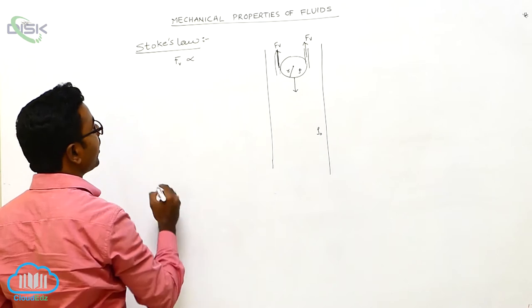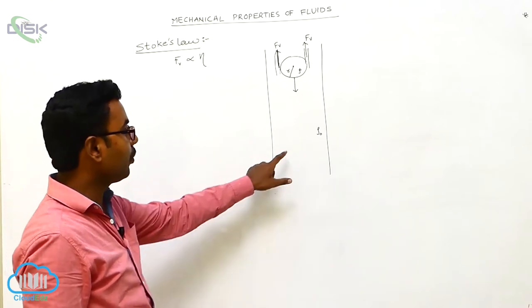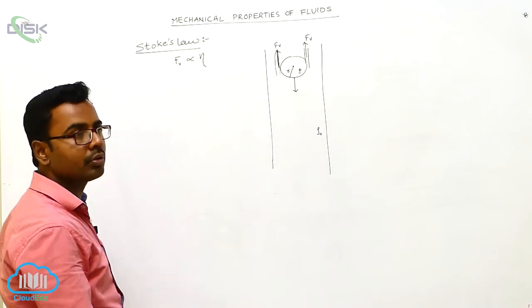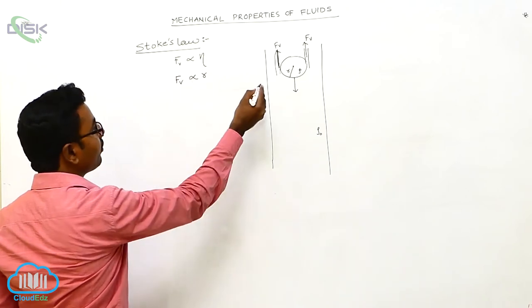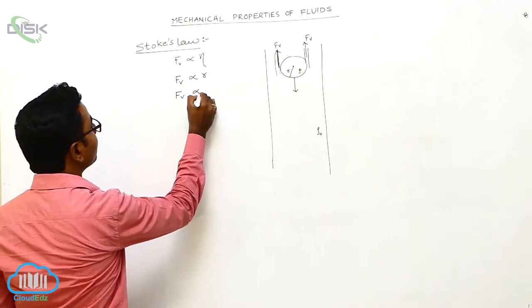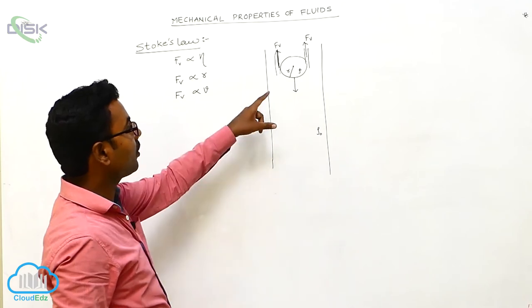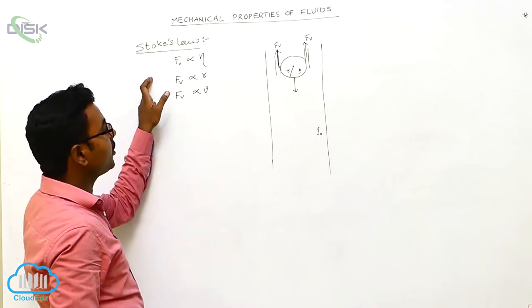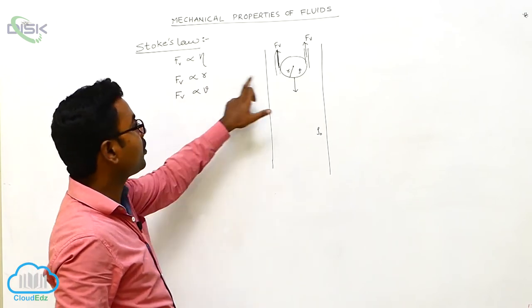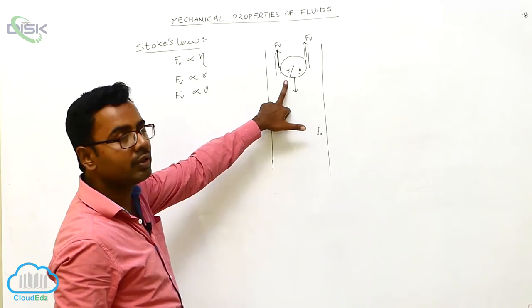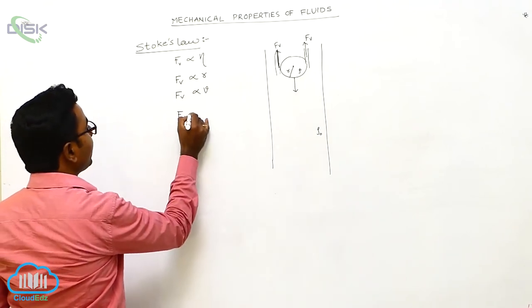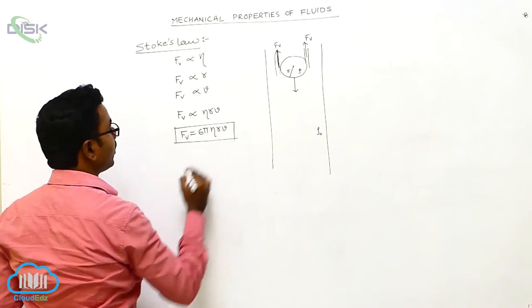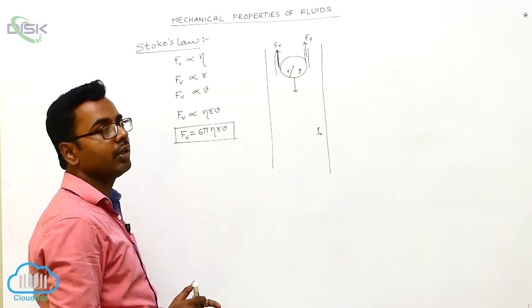According to Stokes, the viscous force is directly proportional to the coefficient of viscosity eta, directly proportional to the radius R of the sphere, and directly proportional to the velocity v of the sphere falling down. Combining all these, Fv is proportional to eta·R·v. Introducing a constant, Fv = 6π·eta·R·v. This is the formula for viscous force acting on a sphere falling in a fluid column.